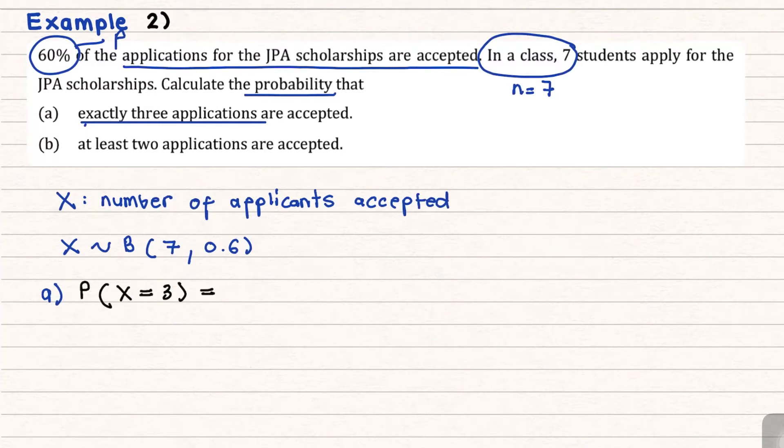Now, this is simply just use the formula of the binomial. So the formula again, P(X=R) would give you N choose R, P power R, Q to the N minus R.